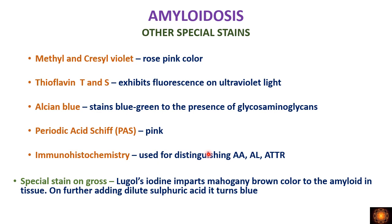Amyloid can also be demonstrated grossly. Applying Lugol's iodine to the involved organ imparts a mahogany brown color. If dilute sulfuric acid is then applied over it, the presence of amyloid turns the color to blue. By this method amyloidosis can be demonstrated macroscopically.